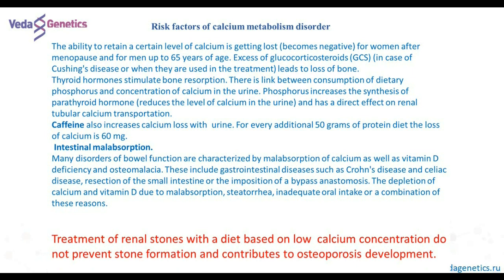Calcium metabolism abnormalities can be of different character. They can be connected with aging, thyroid gland disorder, excess of caffeine — because it increases calcium loss with urine — intestinal absorption disorder, and protein diet. It is also important to know that treatment of renal stones with a diet based on low calcium concentration does not prevent stone formation and contributes to osteoporosis development.